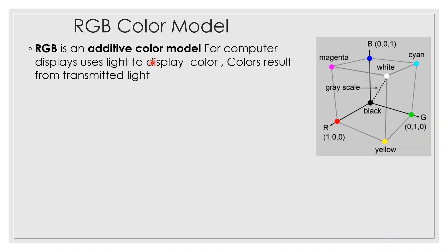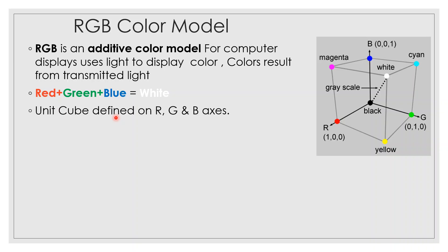RGB is an additive color model used for computer displays — it uses light to display color. Colors result from transmitted light. Red plus green plus blue equals white. RGB is the combination; all colors are produced and combined to make white light.